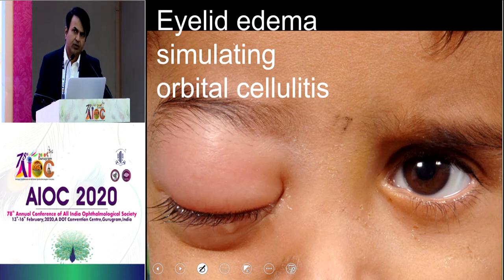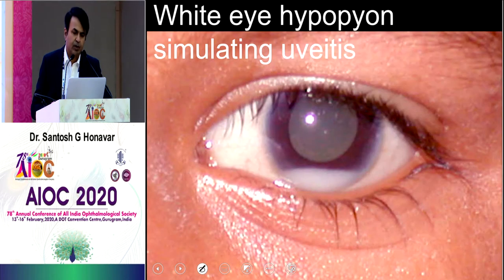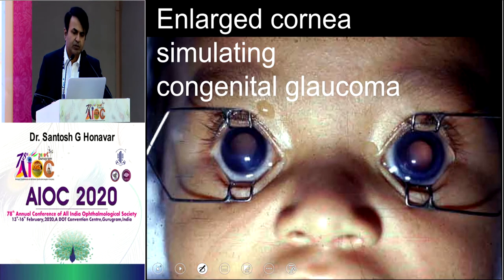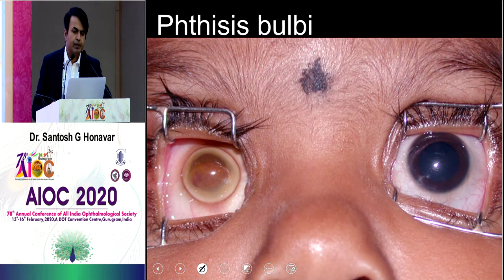These are some masquerades of retinoblastoma. A child may be diagnosed as periorbital cellulitis — the inflammation is because of a necrotic tumor. There could be a white eye with hypopion: the key word is 'white eye,' meaning no circumciliary or conjunctival congestion, yet the child appears to have uveitis — that is anterior segment infiltration of RB. White eye hypopion in a child should be viewed with suspicion. It can also simulate congenital glaucoma, especially if the cornea is hazy and may even present with Haab's striae, or as phthisis bulbi due to tumor necrosis.